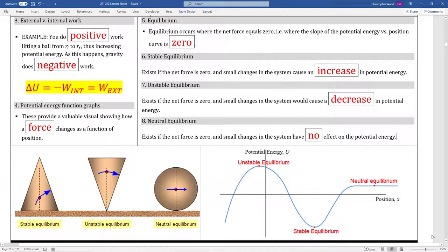Boxes five through eight, as well as the visual on the lower left and the graph at the lower right, provide a really good overview of equilibrium, which includes stable, unstable, and neutral equilibrium.